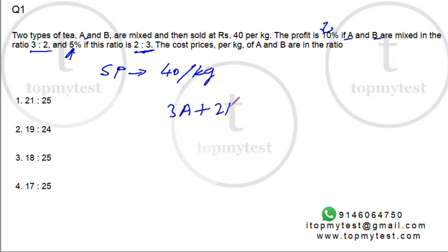This sales will be the same as a 5% profit here. So 105% of two kilos of A plus three kilos of B.